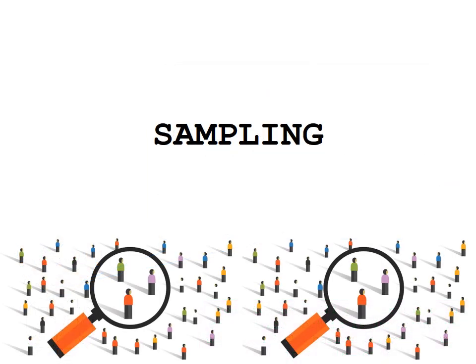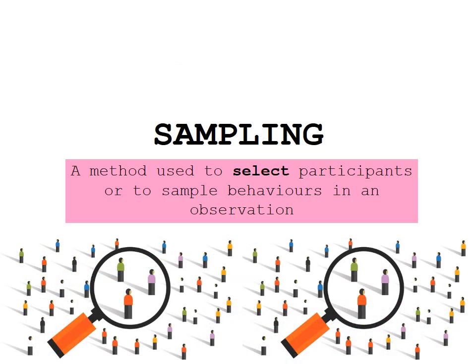Let's start off by looking at sampling and understanding what sampling is. Sampling is a method used to select participants or to sample behaviours in an observation. We're looking at sampling in terms of selecting participants for our experiment today, and we'll come on to that second part in the next lesson.